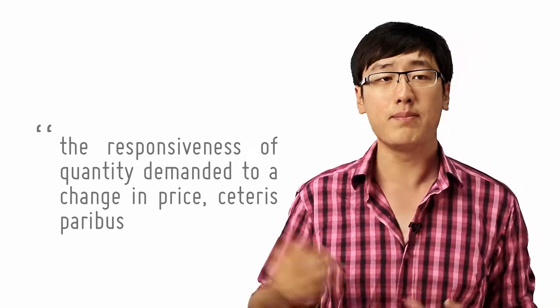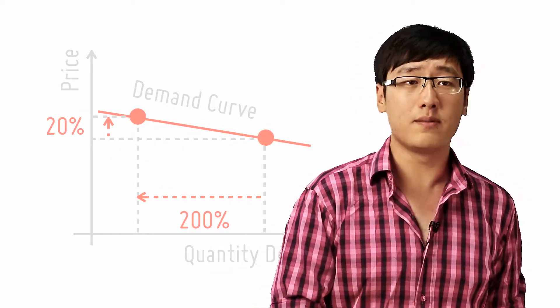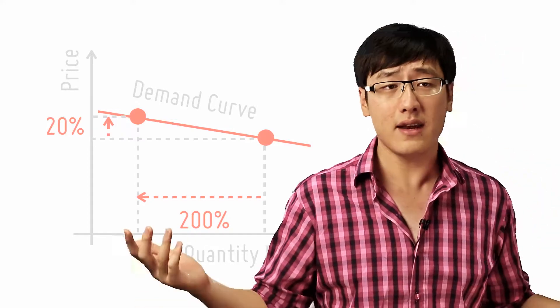So let's look here. When we have a demand curve, when price increases by 20%, quantity demanded decreases by 200%. So what is the PED? 10?